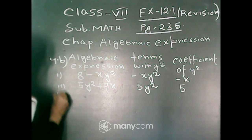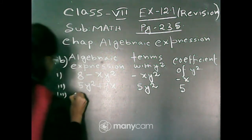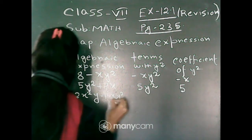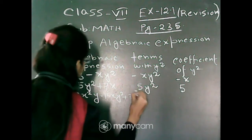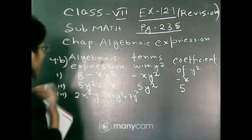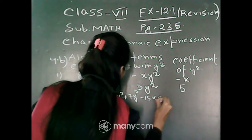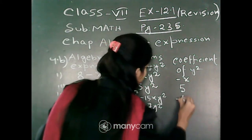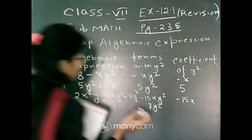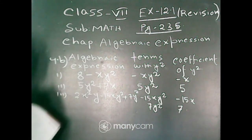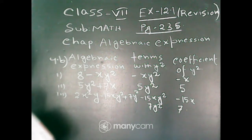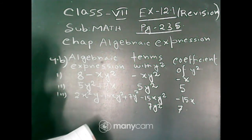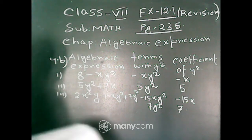Next, question number 3. Here the given algebraic expression is 2x square y minus 15xy square plus 7y square. The terms containing y square are minus 15xy square and 7y square. In the term minus 15xy square, the coefficient of y square is equal to minus 15x. In the term 7y square, the coefficient of y square is equal to 7.